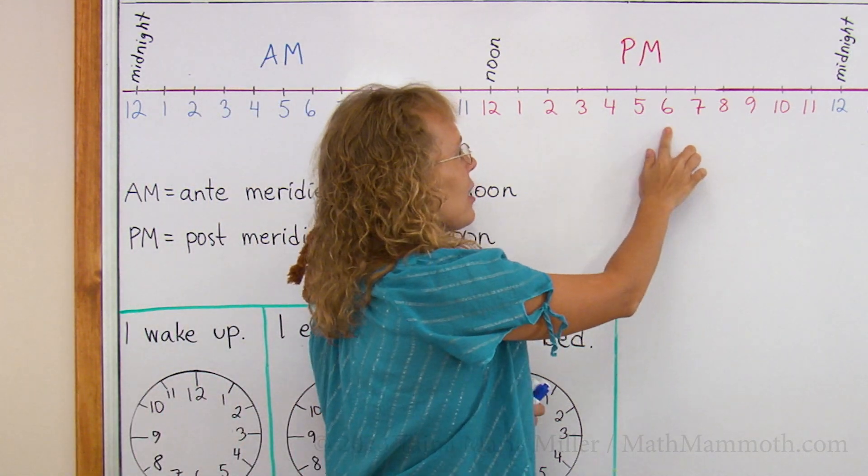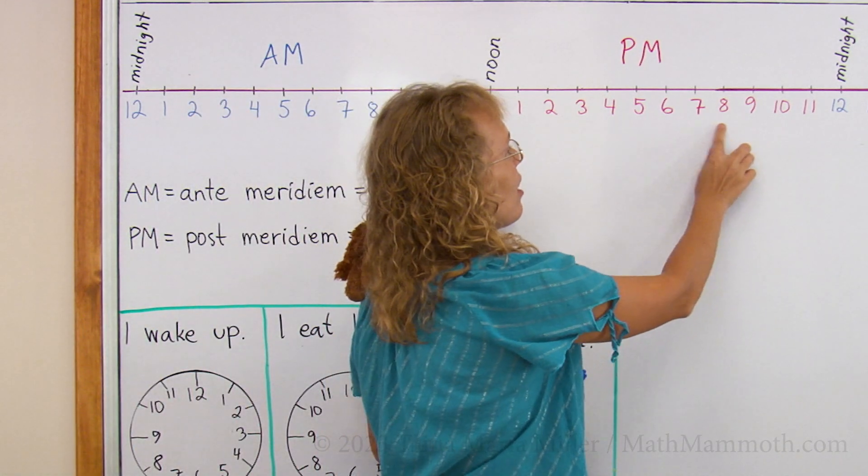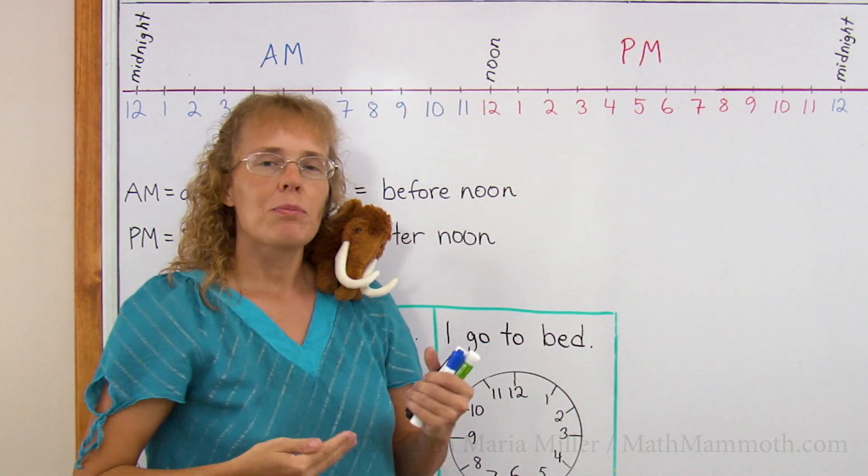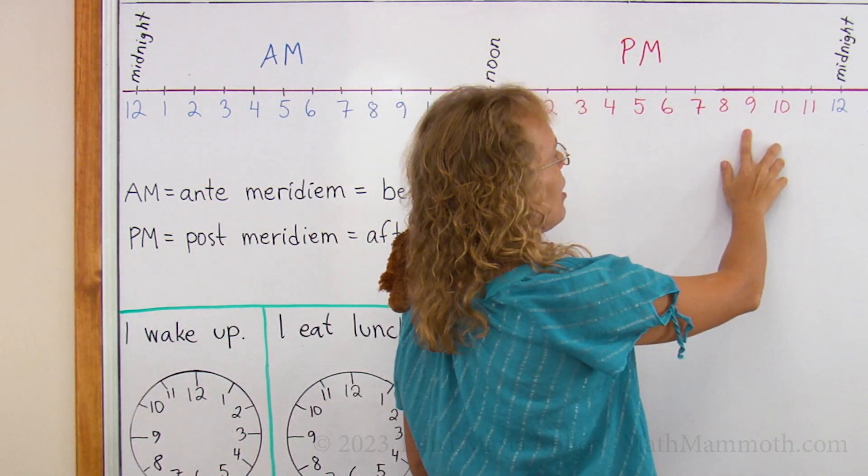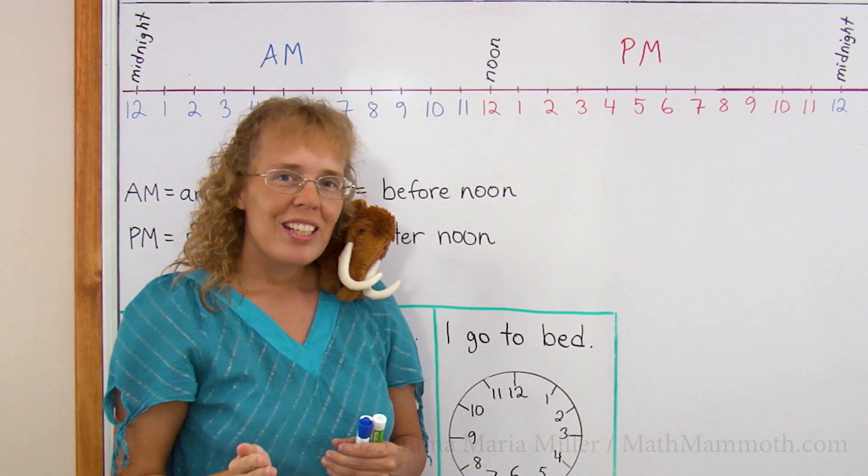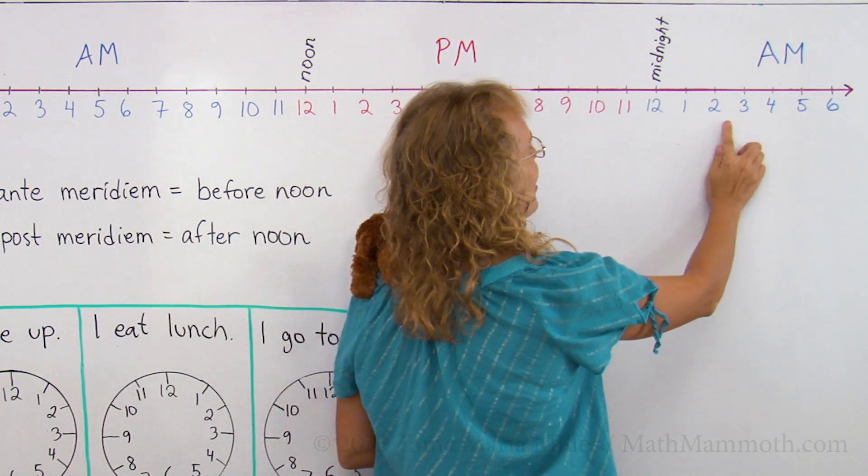And then, when it comes 6 o'clock, we say that the evening starts. These here are the evening hours, but they are still PM. Somewhere here, you go to bed at 8 o'clock, 8 PM, 9 PM, 10 PM. You go to bed, and the night time starts. And again here, people are sleeping.